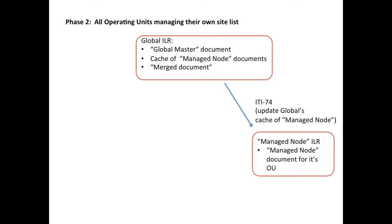In phase two — our end goal — there are no more operating units that are not being managed. We simply drop out the slave nodes, but we still have the same picture: the global master document, which was our initial reference document of sites we want to maintain eternally; the cache of the managed node documents for each of the operating units; and then the merge. The merge document pulls in all of the managed nodes' operating units, overwriting anything that was in the global master document.